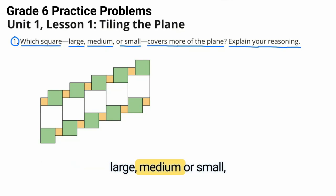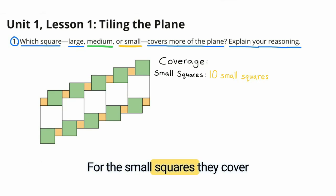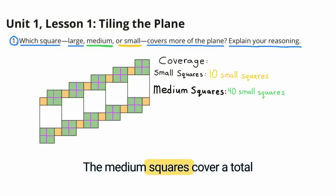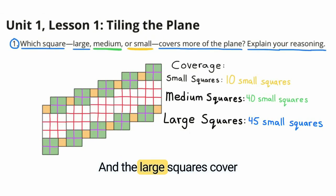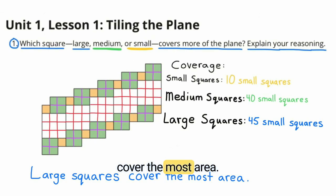Which square, large, medium, or small, covers more of the plane? Explain your reasoning. For the small squares, they cover 10 small squares. The medium squares cover a total of 40 small squares, and the large squares cover a total of 45 small squares. The large squares cover the most area.